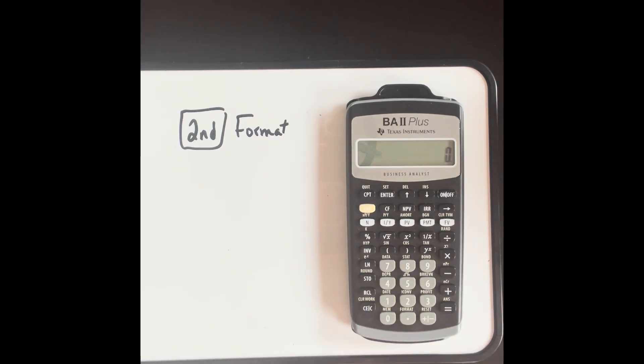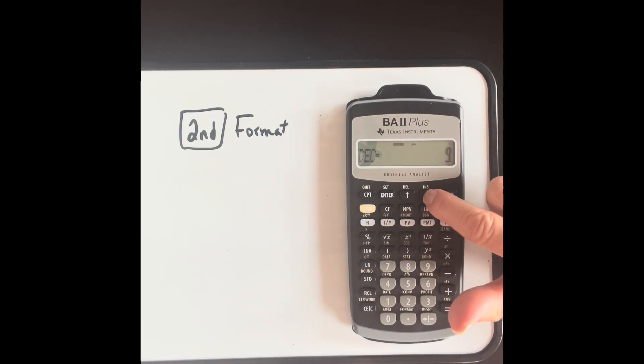Let's go back into our formatting. So second format. I'm going to leave it as a floating decimal point, and then I'm going to use this arrow to look at what's next. The next option is for angular measurement.